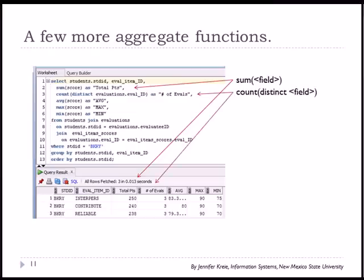I also have a count distinct and the count distinct is a way to make sure that if you have the same data showing up in more than one row, that that particular data item only gets counted once. So count distinct is something you would use to make sure that you don't count the same data more than once. This is showing the number of evaluations.